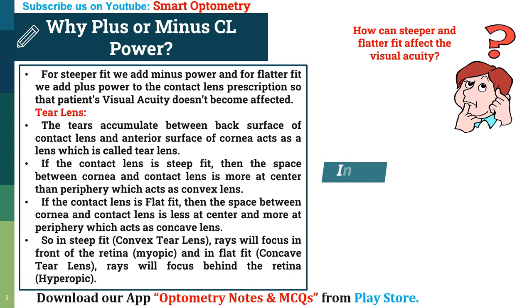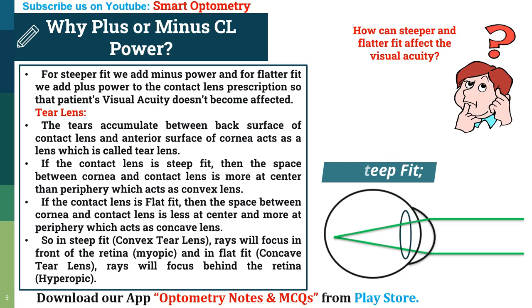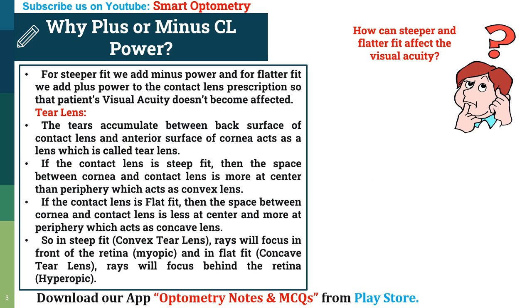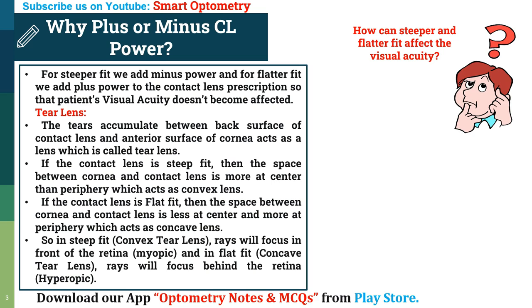In steep fit, due to formation of a convex tear lens, rays will focus in front of the retina and the patient will become myopic. And in flat fit, due to formation of a concave tear lens, rays will focus behind the retina and the patient will become hypermetropic, which will affect the visual acuity. That's why for steeper fit we add minus power and for flatter fit we add plus power to the contact lens prescription, so that the patient's visual acuity doesn't become affected.